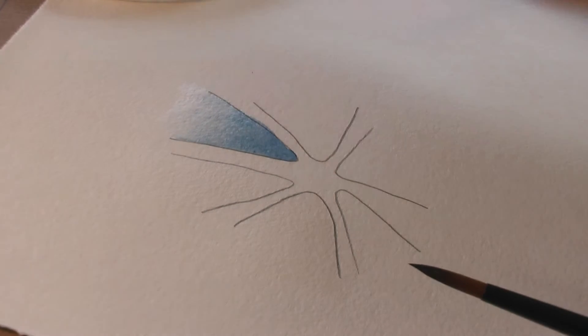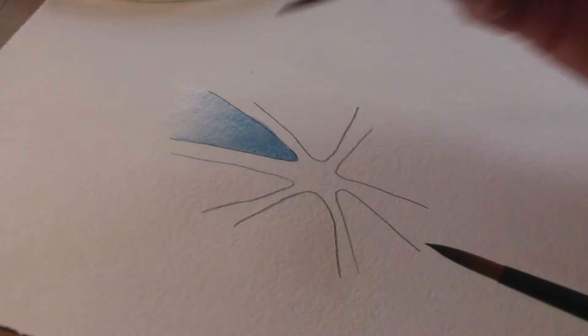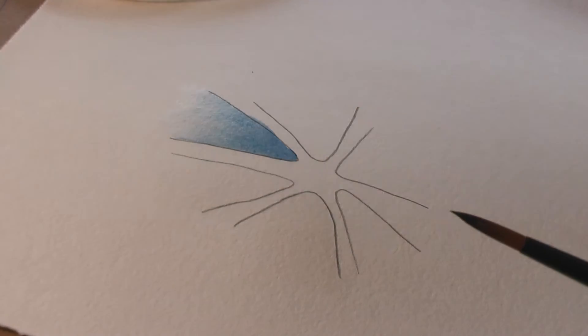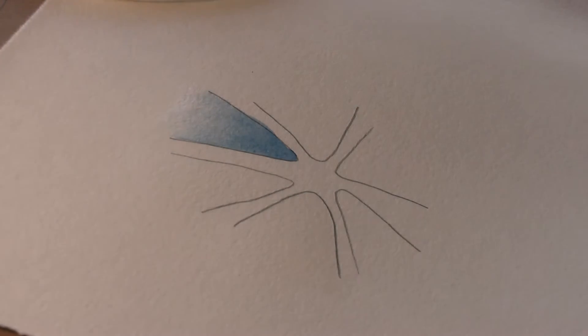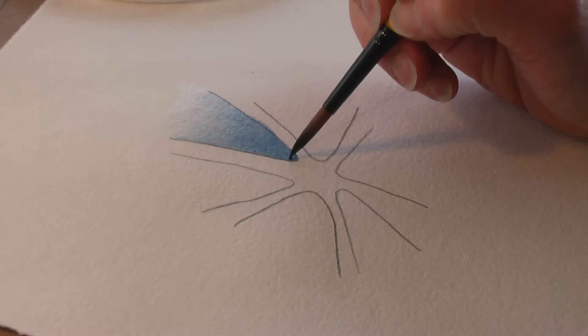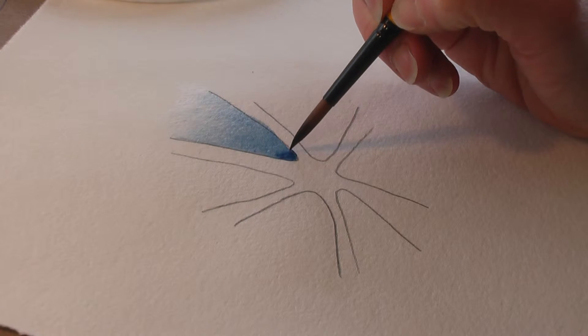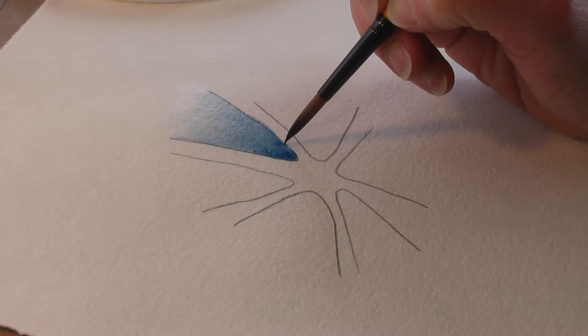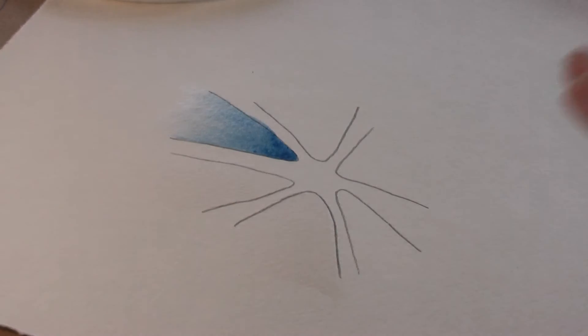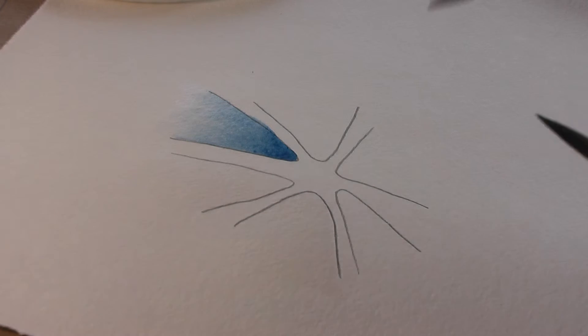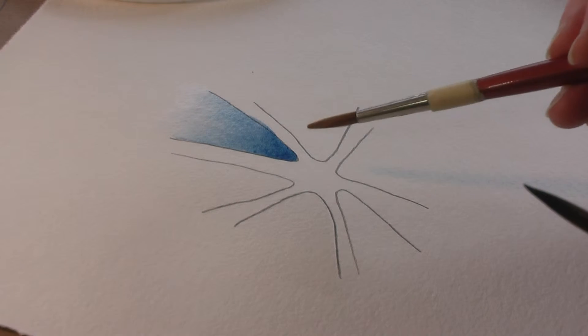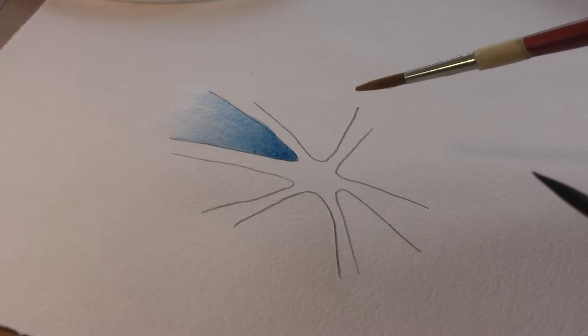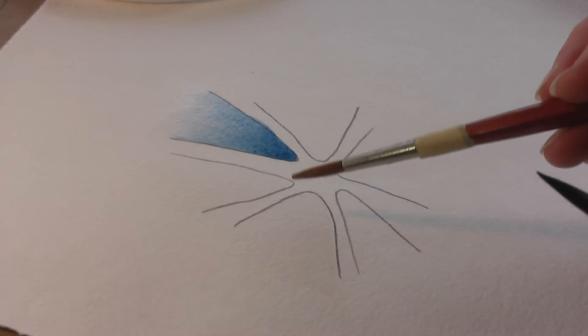And I can make this area darker. All I have to do is just touch some of the indigo right in there. I'm not making this stroke, and I'm going to leave that and I'm going to let that dry. It will dry lighter than what you see here.